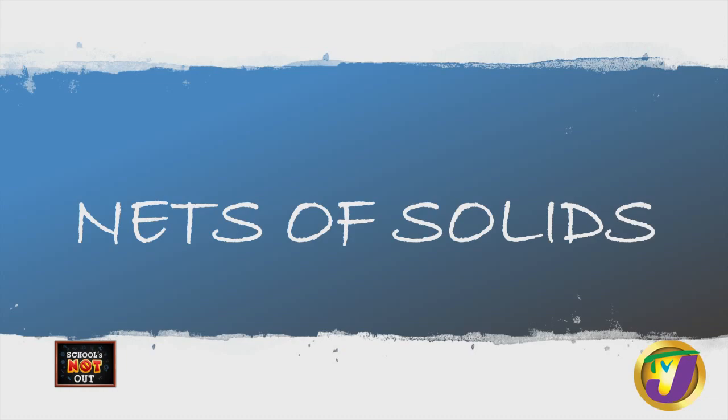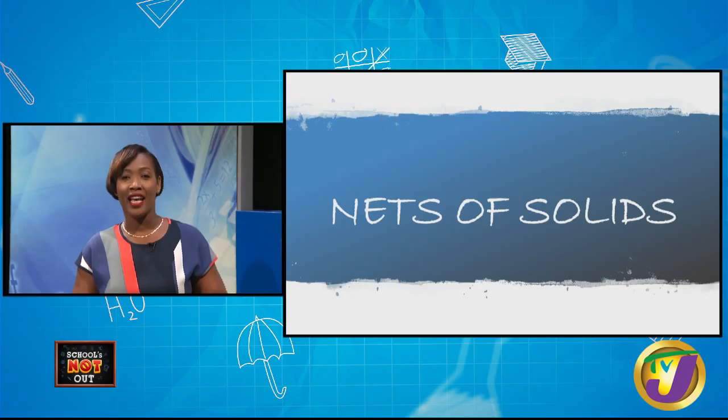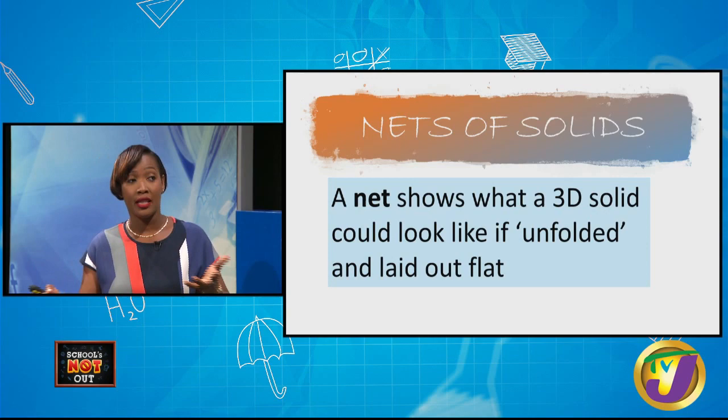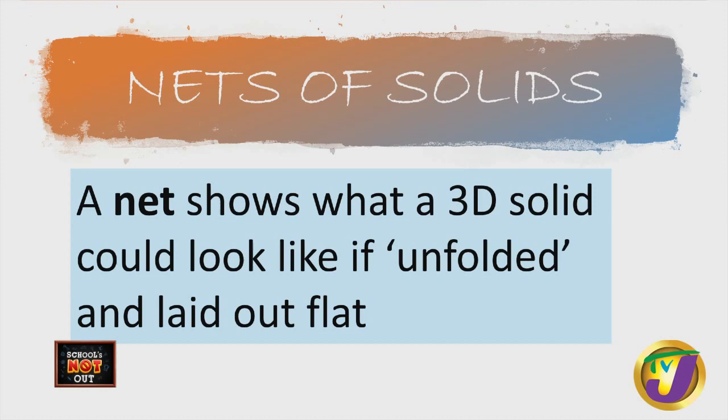Let's look at some nets of solids and see if you can tell me the solid that would come from each of these nets. Before we even look at the nets, let's see what a net is. A net shows what a 3D solid could look like if unfolded and laid out flat.